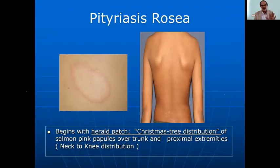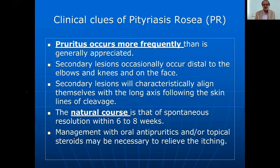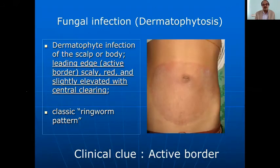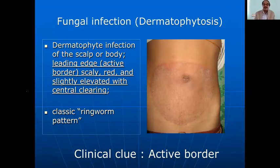Tinea corporis — the clinical clue is a round lesion with an active border in a classical ring pattern. Topical luliconazole or other antifungal agents should be used. If a larger area is involved, systemic griseofulvin, ketoconazole, or itraconazole can also be used.